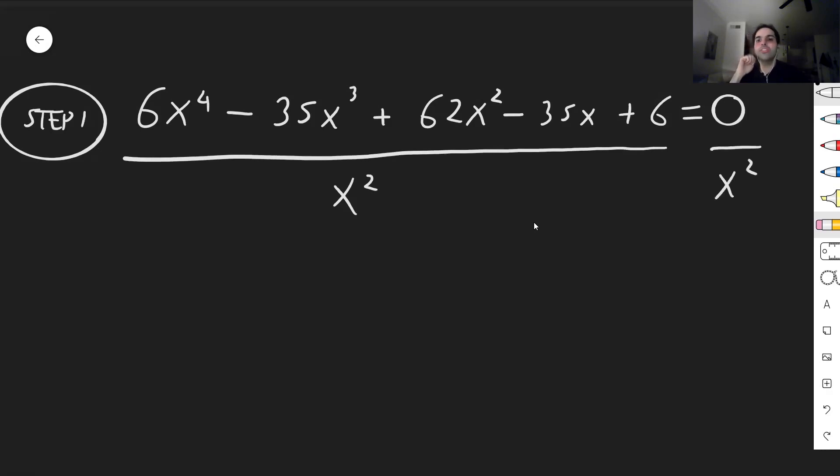You'll see why we need to do that soon, because then once we do that, we get 6x squared minus 35x plus 62 minus 35 over x plus 6 over x squared equals zero.